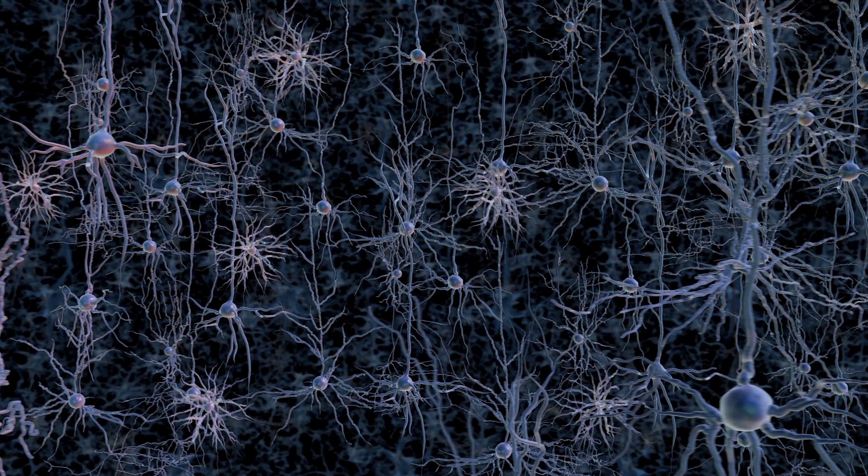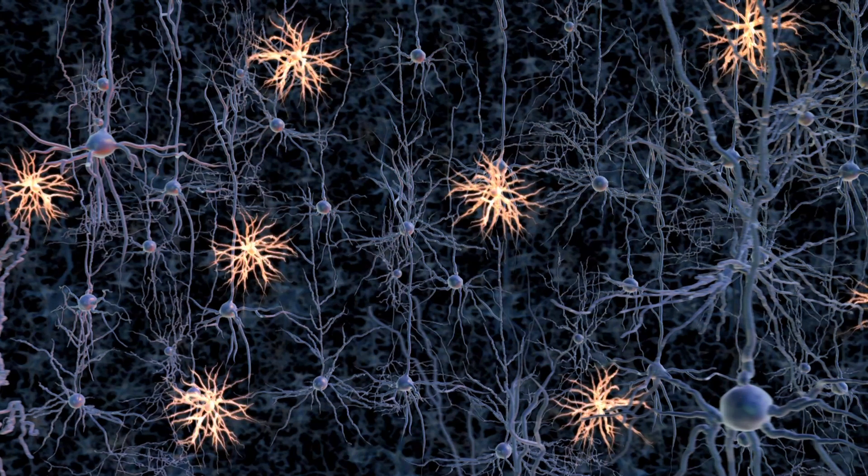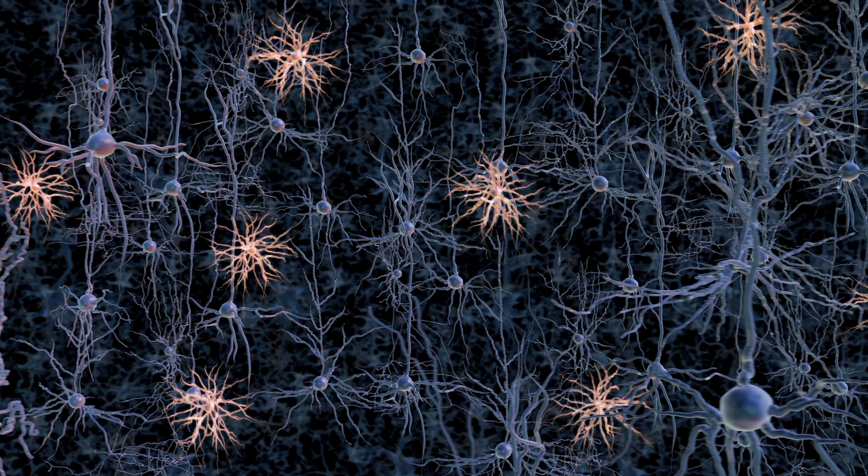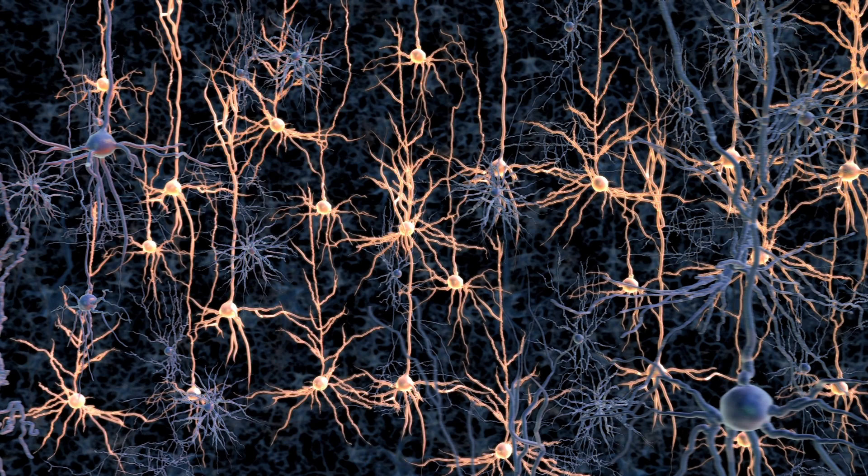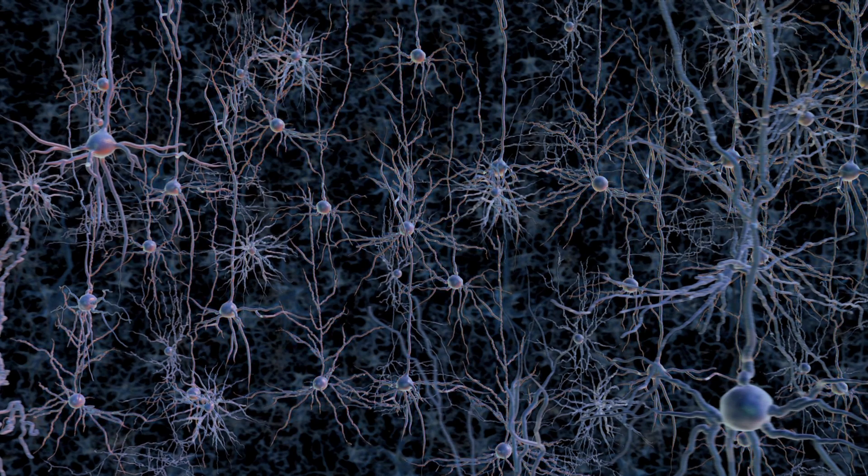For example, these cells, the basket cells, have small input branches and output branches, and they release pulses of chemical that inhibit their targets. Whereas these cells, the pyramidal cells, are large and project long distances and they excite the cells that they target.